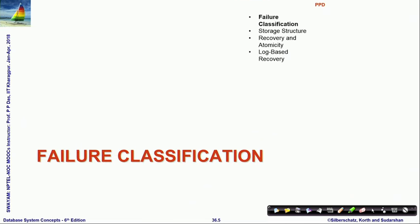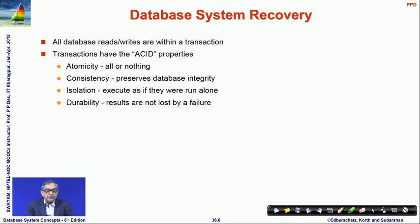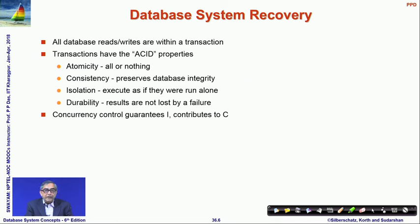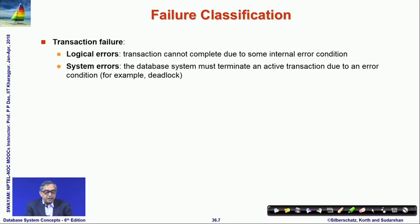All database reads and writes are within a transaction, and transactions must satisfy the ACID properties. Concurrency control guarantees isolation of transactions and contributes to maintaining consistency. Application programs are heavily responsible for guaranteeing consistency, but to guarantee atomicity and durability, the recovery subsystem is required, and it also contributes to the consistency property.